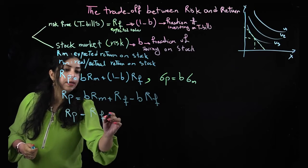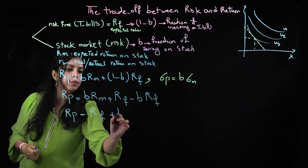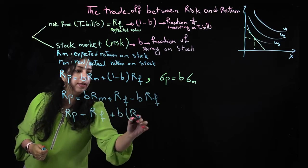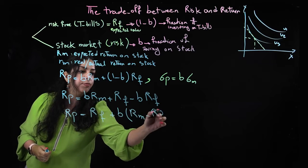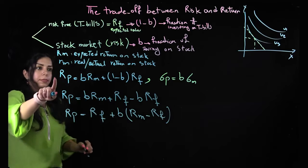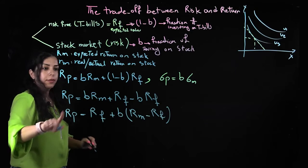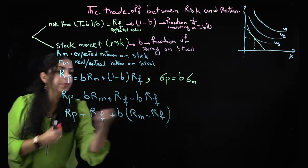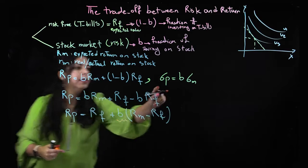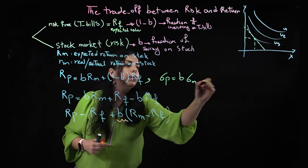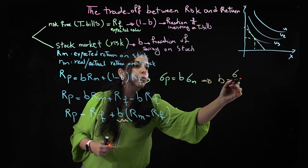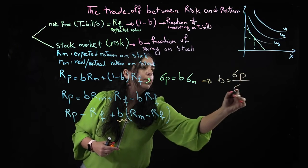I keep rf here, and plus b, I put rm minus rf. So it's the same thing, exactly like here, just so I have opened it up. Then instead of b here, I can calculate b from this formula, b is equal to sigma p over sigma m.